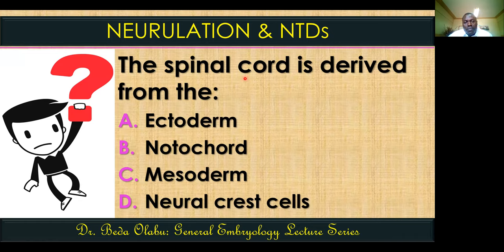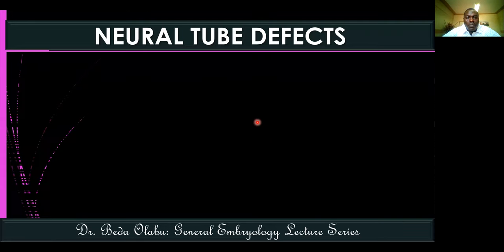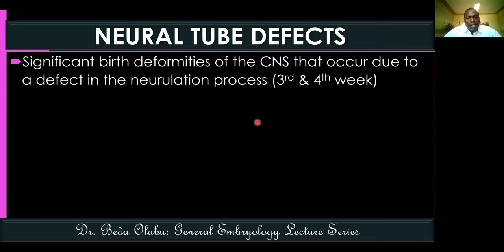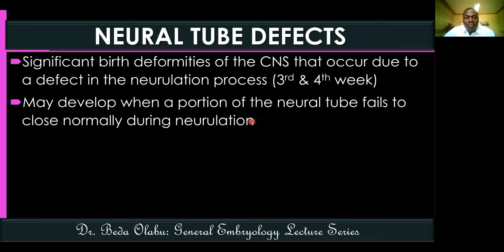The neural plate is from ectoderm and is the one that forms the neural tube. Neural tube defects are very significant birth defects of the central nervous system that occur due to a defect in the neurulation process, taking place around the third and fourth week of development. They develop when a portion of the neural tube fails to close normally.